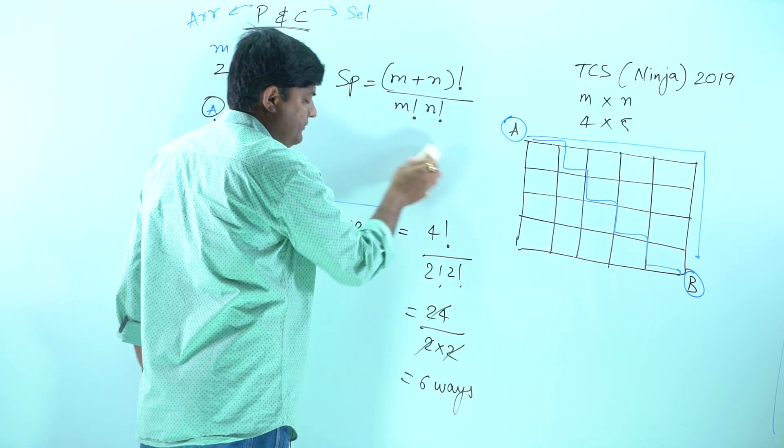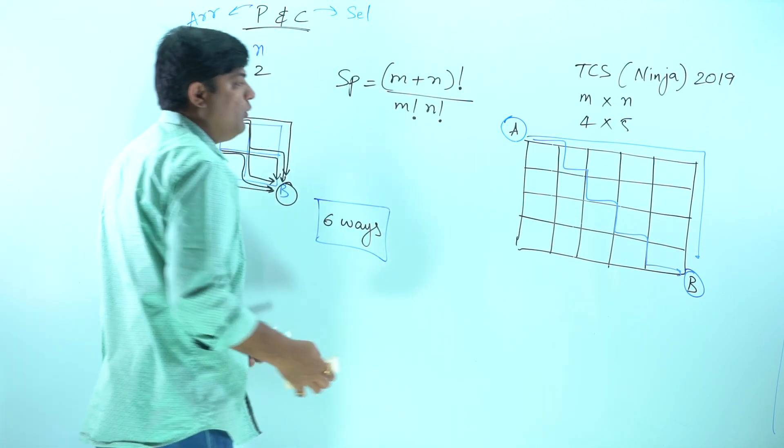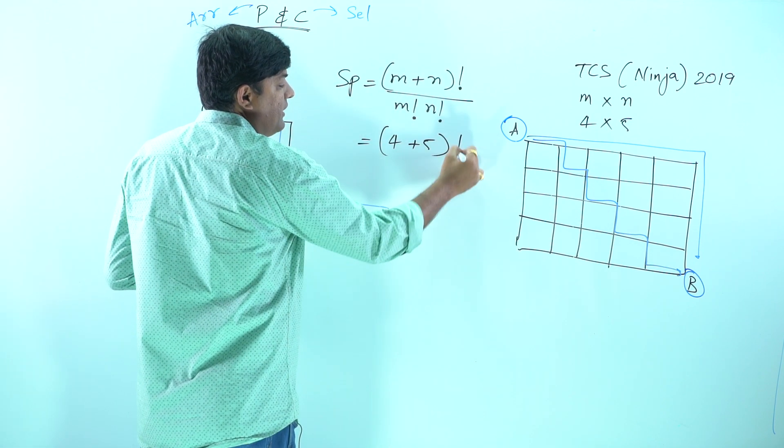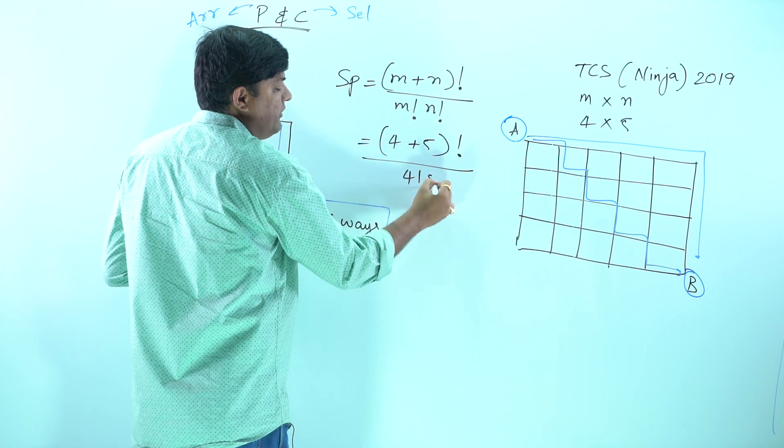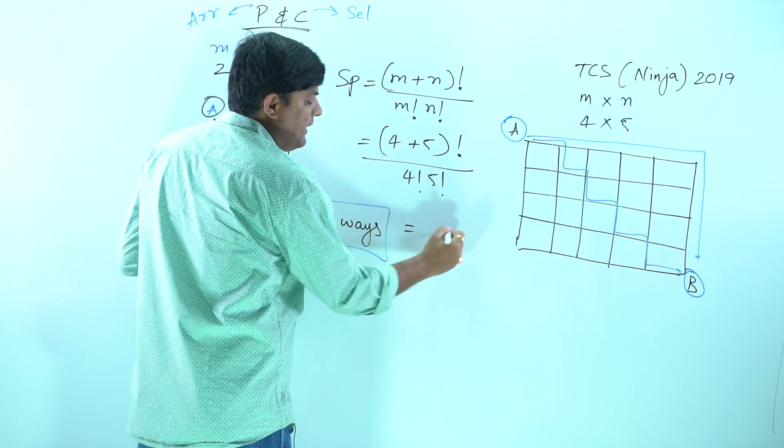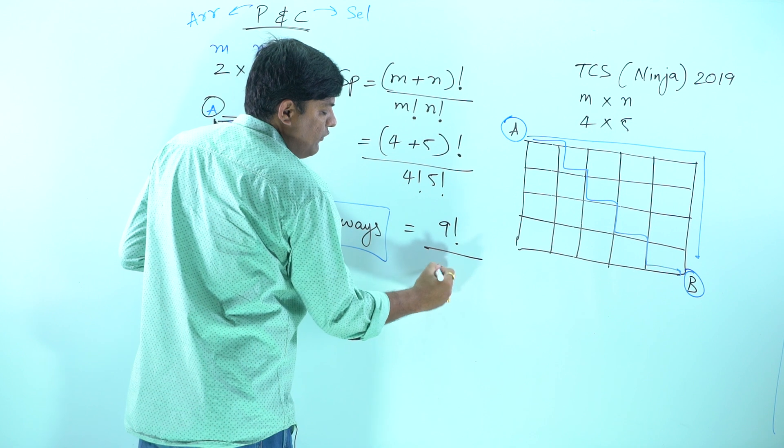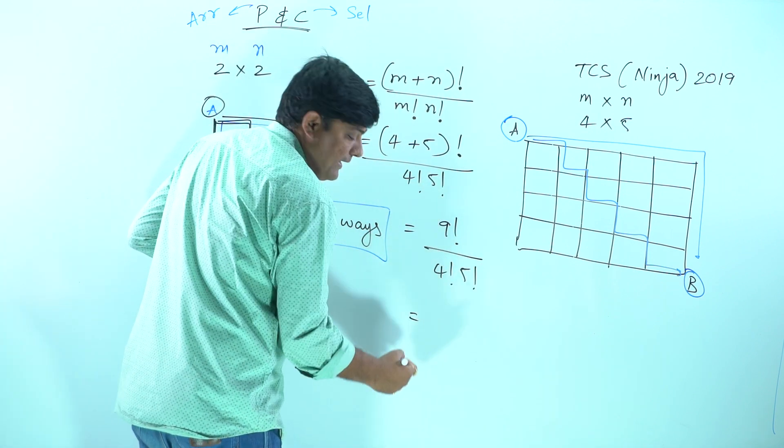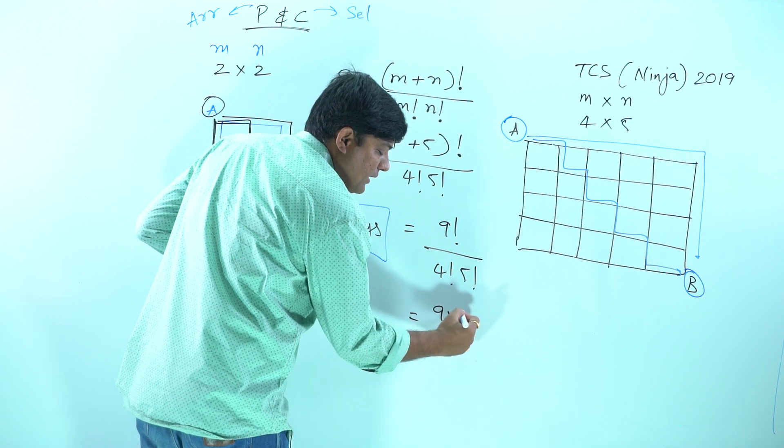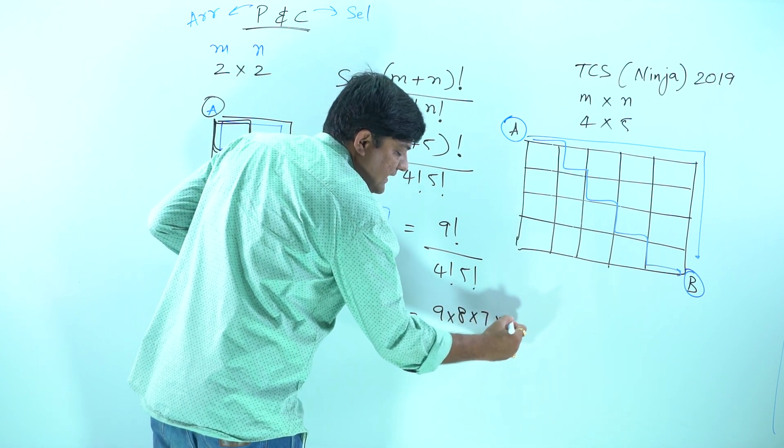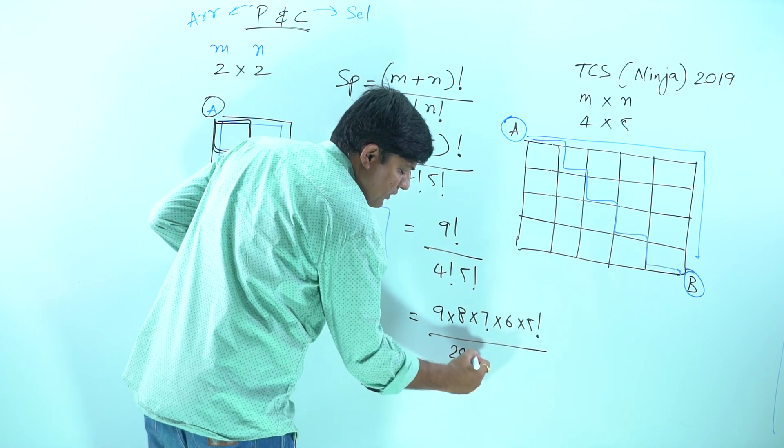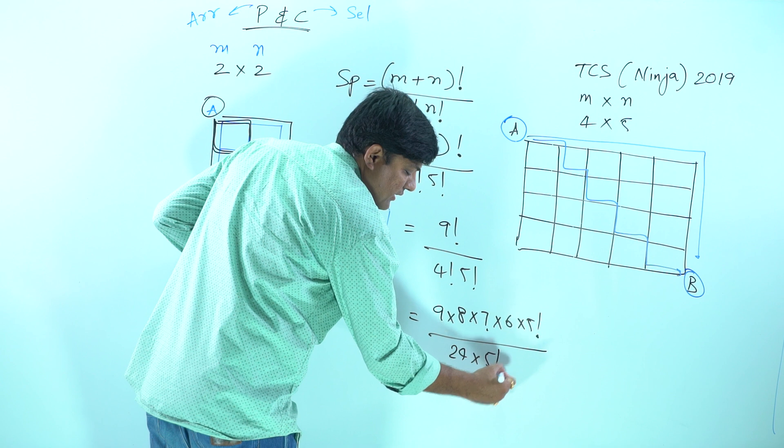Now using the same thing, we can find out m that is 4, so (4+5)! upon 4! 5!, that is 9! upon 4! 5!. So 9! can be written as 9 into 8 into 7 into 6 into 5! upon 24 and 5!. These two will get cancelled.